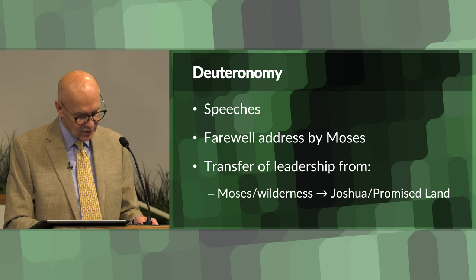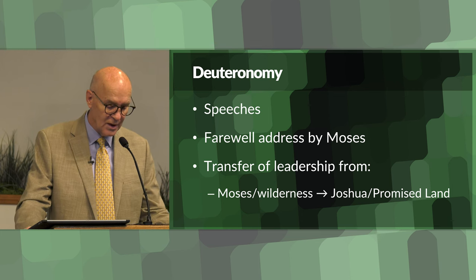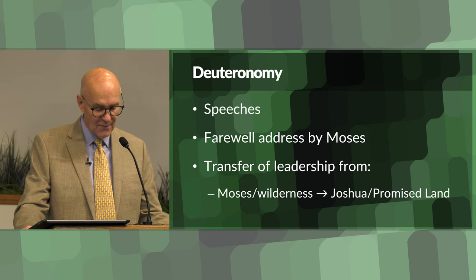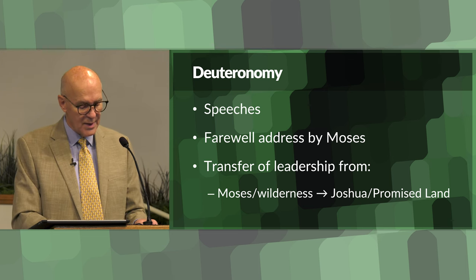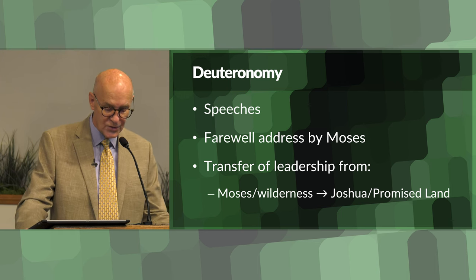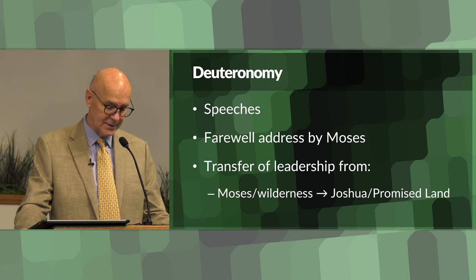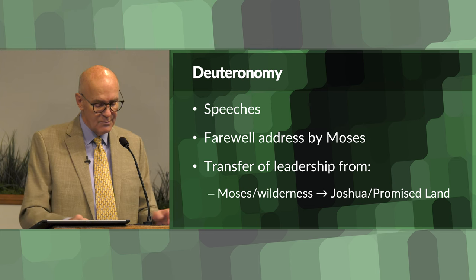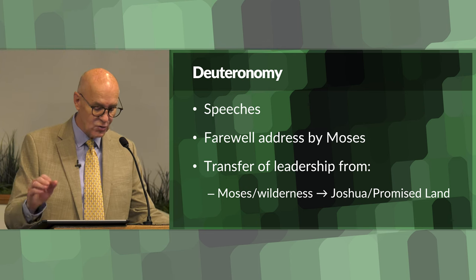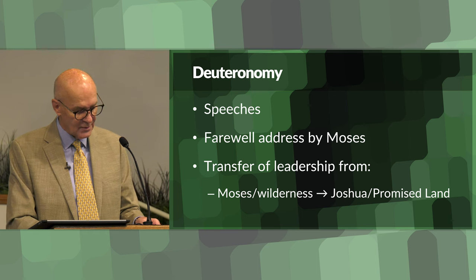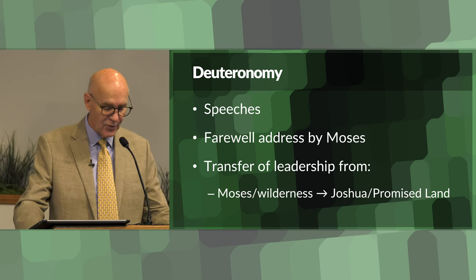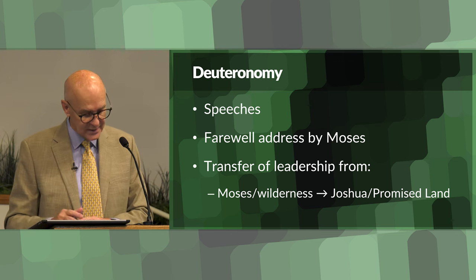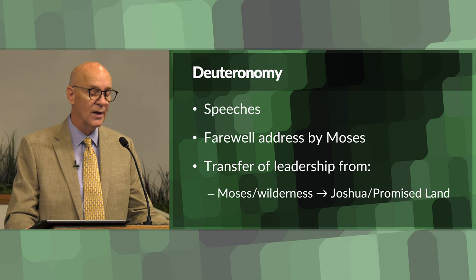In many ways, Deuteronomy serves as a recapitulation and reinterpretation of the laws and events recorded in the book of Numbers, which we have already covered. It also emphasizes the importance of obedience to God's commands and the blessings that come with obedience, while warning against the consequences of disobedience. The book is structured as a kind of farewell address by Moses as he prepares to pass the mantle of leadership to Joshua and the Israelites prepare to enter the promised land. It also serves as a crucial bridge between the wilderness experiences recorded in Numbers and the conquest and settlement of the promised land depicted in subsequent books like Joshua.